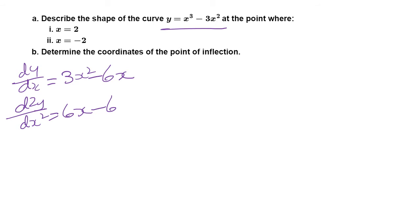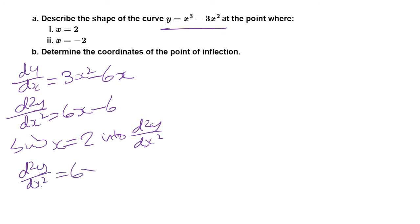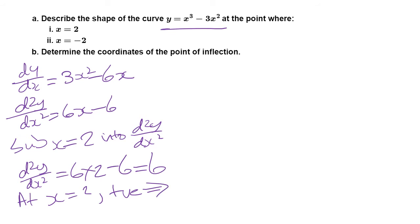Next, substitute x = 2 into d²y/dx²: that gives 6(2) − 6 = 12 − 6 = 6. So at x = 2 the second derivative is a positive number. Thinking back at the table, a positive second derivative means the curve is concaving up. So your answer should be: at x = 2, the curve is concaving up.